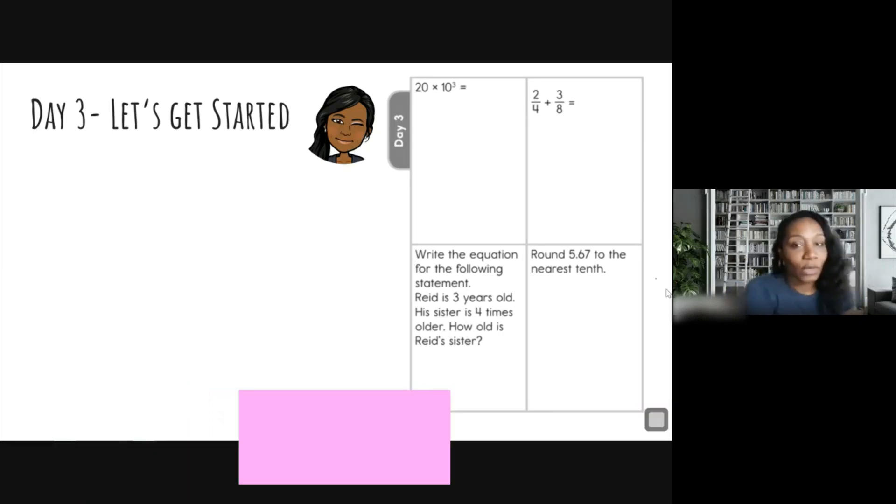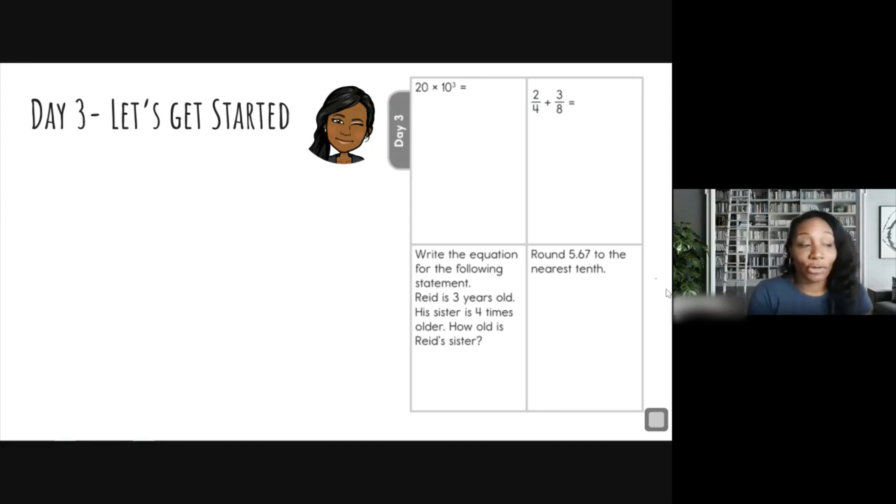So number one says 20 times 10 to the third power. Wow, that's a mouthful. What does that mean? Right? So remember that you have 10 as your base number and three is your exponent. That three is telling you how many times to multiply your base number by itself. So let's write that out and see what that looks like.